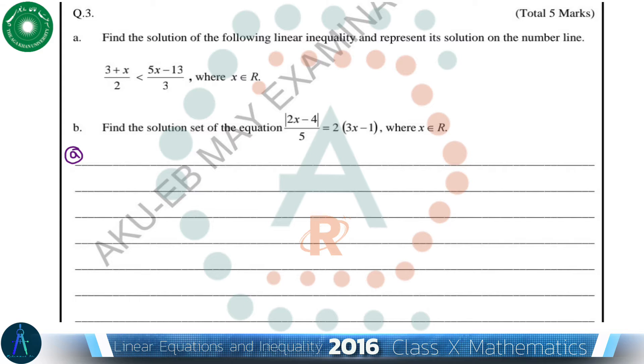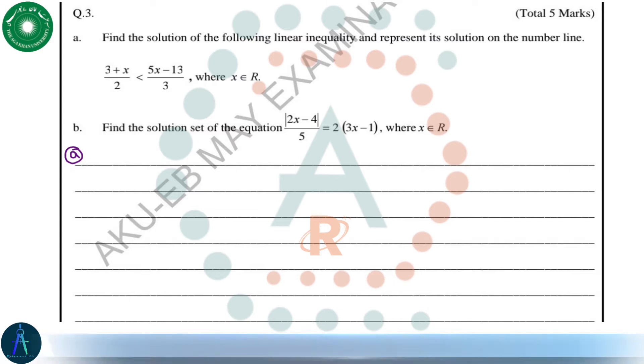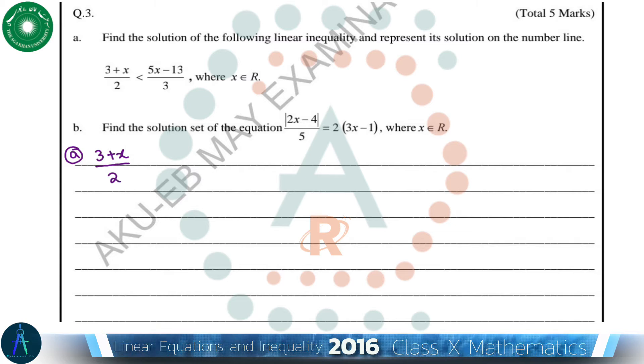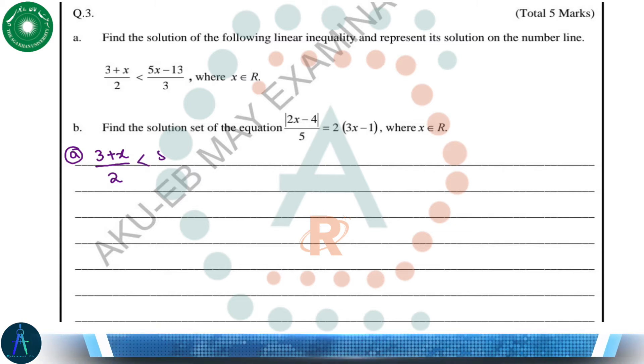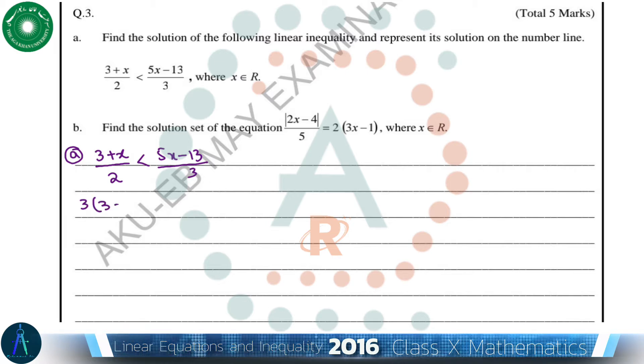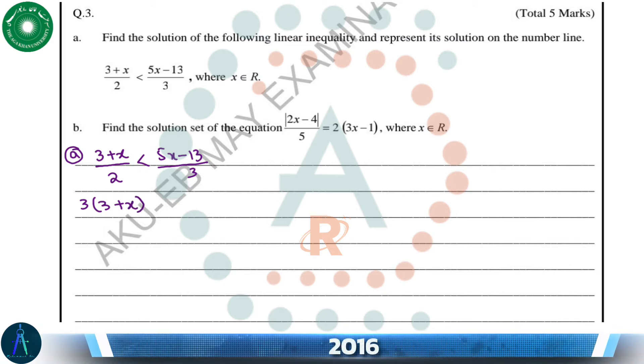In this question we have to solve this inequality and represent it on a number line. So let's start solving this inequality: (3+x)/2 < (5x-13)/3. First step, we do cross multiplication: 3(3+x) < 2(5x-13).